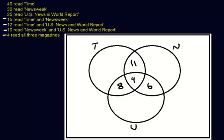Now we have 25 read U.S. News and World Report, so these four regions down here have to add up to 25. Right now we have 18, so the only-U.S.-News region has to be 7.